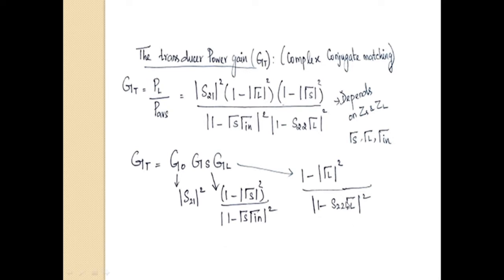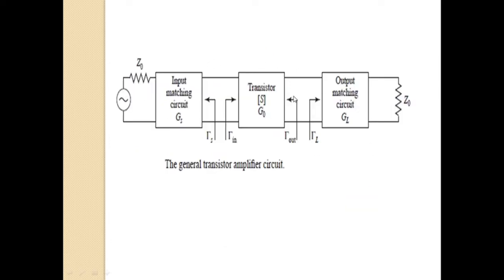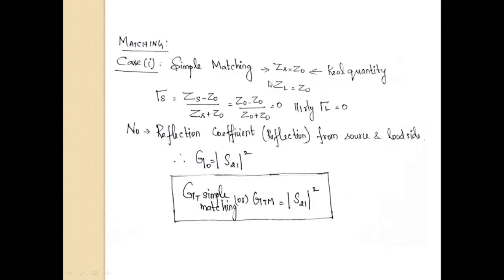The simple approach adds an input matching circuit and output matching circuit to the two-port network transistor model, for improving source gain and load gain. By using the input matching circuit, the source impedance is tuned to Z0 — that means ZS = Z0. Similarly, ZL = Z0 by the output matching circuit. Based on this condition, all characteristic impedances of the whole circuit become Z0.